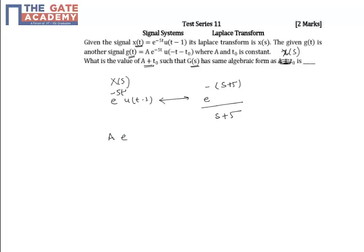Similarly, if you find the Laplace transform of a times e^(-5t)u(t-t_0), you will get -a times e^((s+5)t_0) divided by (s+5).